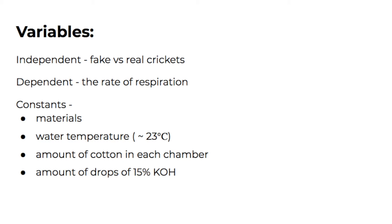The variables in this experiment include the independent variable, which is fake crickets versus real crickets, the dependent variable, which is the amount of oxygen used by the crickets, and your constants listed in the last clip.